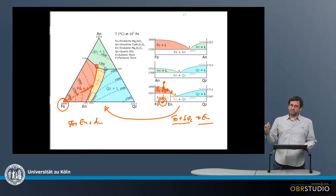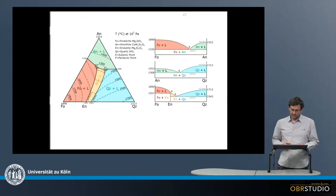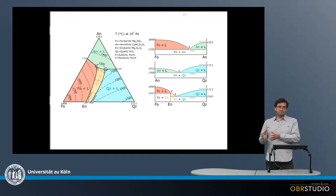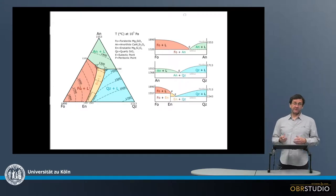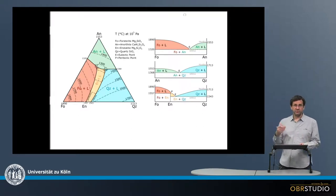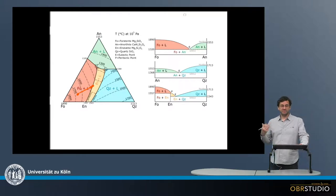Now, what is happening if it's not equilibrium crystallization, but fractional crystallization? During fractional crystallization, the minerals that formed will not fully react with the surrounding melt, or they will be extracted. In the case of chondrules, usually olivine is not extracted from the chondrule, but it might not entirely react with the remaining melt. So again, if we start somewhere in the forsterite primary phase field, the melt will develop towards this peritectic line.